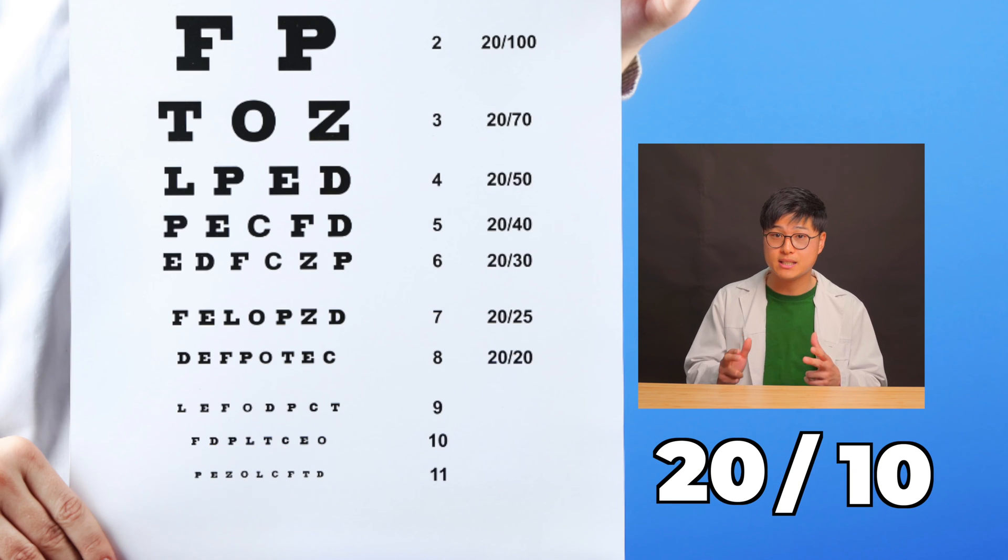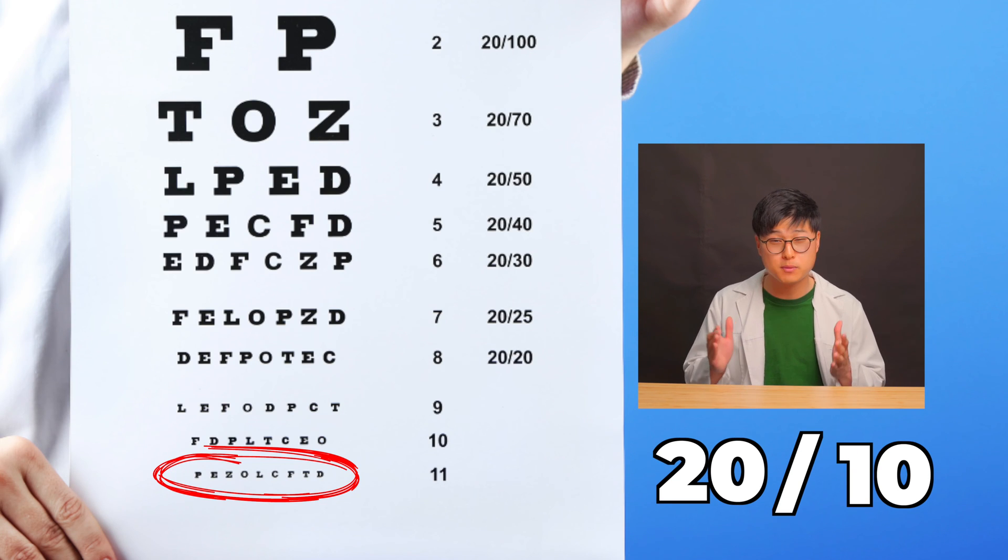It's completely possible to achieve 20-10 vision, which is considered to be the human limit of visual acuity, although many people, even with glasses, have a hard time doing so.